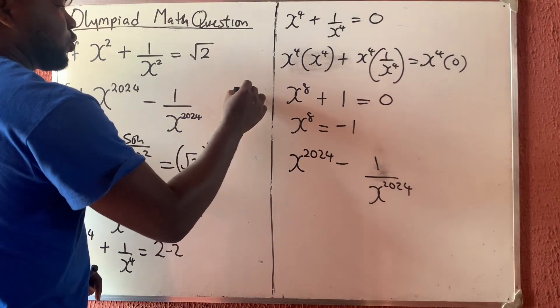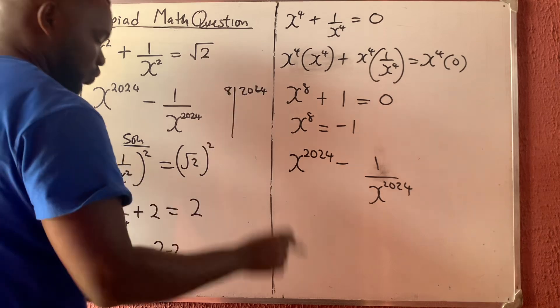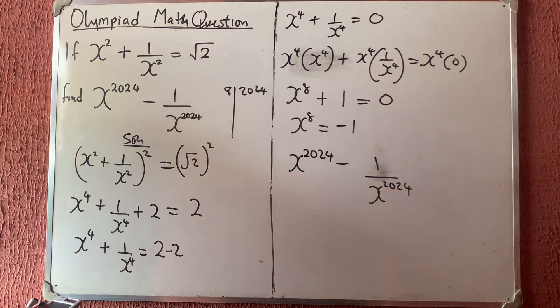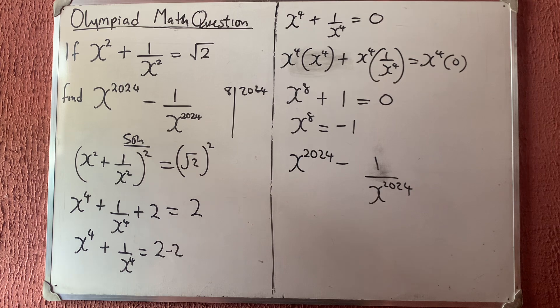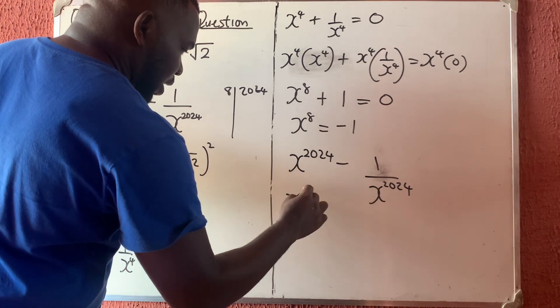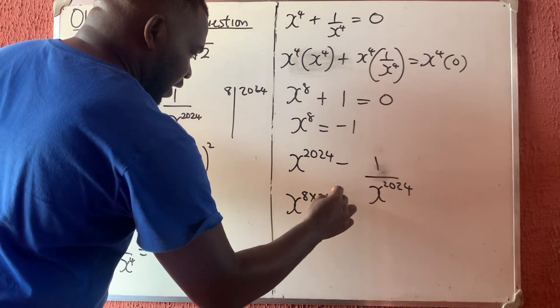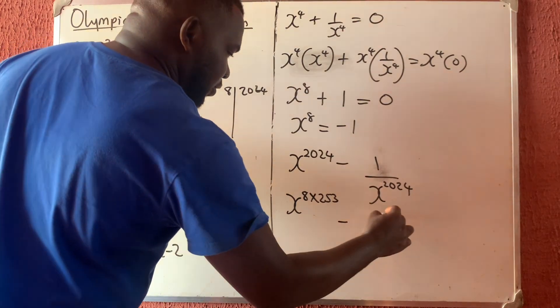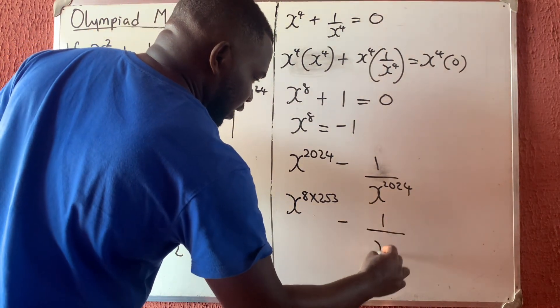Now let us see if we can break 2024 down into 8. So let us check 2024 divided by 8, what do you have? 2024 divided by 8, I'm going to have 253. So this is the same thing as saying x raised to power 8 times 253 minus 1 over the same thing, x to the power 8 times 253.